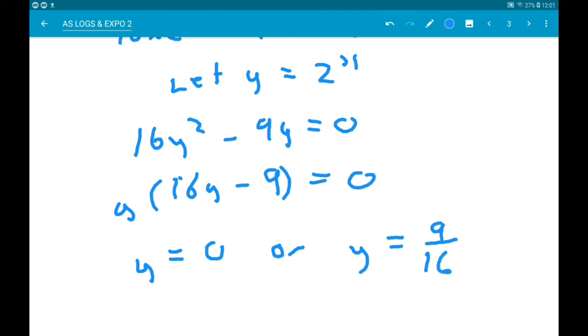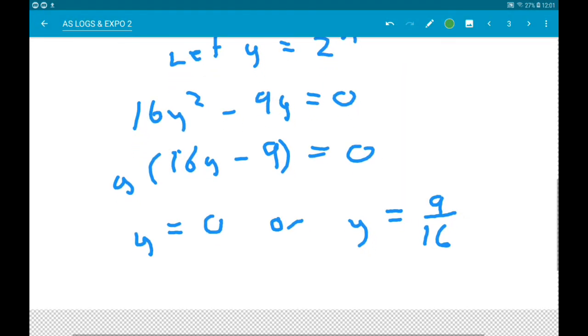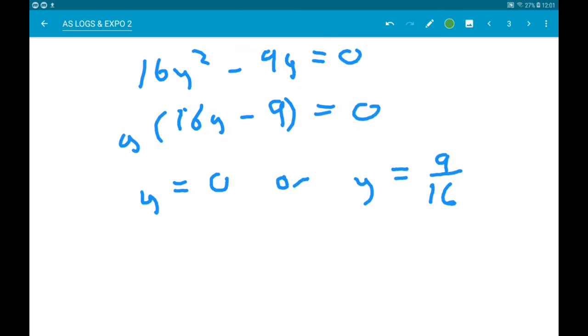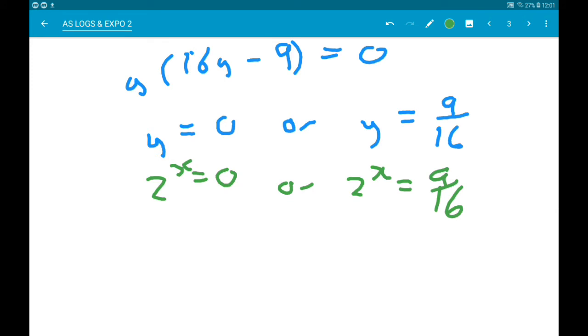Now let's undo the substitution. So this means either 2 to the power x is 0 or 2 to the x is 9 sixteenths. Now only one of these is valid. 2 to the x being an exponential graph can never equal 0. So, we would say that 2 to the x can never equal 0. So, now we need to solve 2 to the x equals 9 sixteenths.